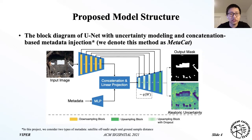For the metadata injection, in this paper we consider two types of information: off-nadir angle and the ground sample distance. This figure shows the concatenation-based approach. In this case, we pass the metadata into a multilayer perceptron to expand the feature dimension, and then concatenate it with the CNN features from the U-Net encoder.